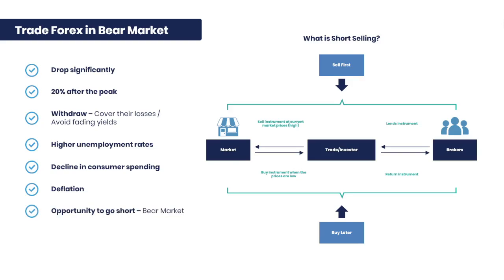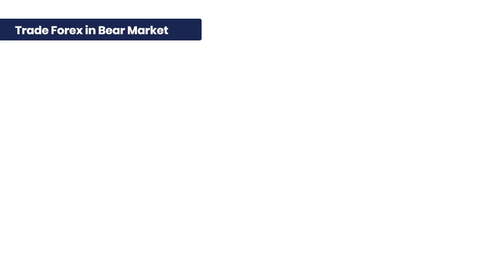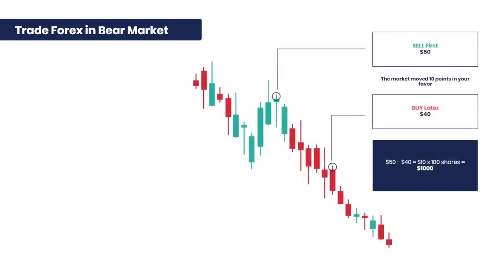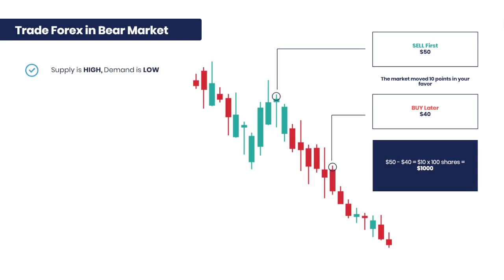It is important to note that one of the main factors that determine the occurrence of a bear market is when supply is high and demand is low. With CFDs from EximTrade, traders can trade during bear market conditions by speculating on price movement through short selling.